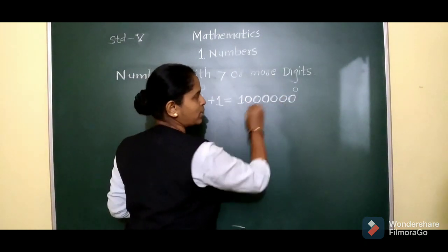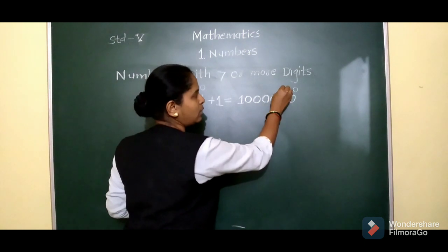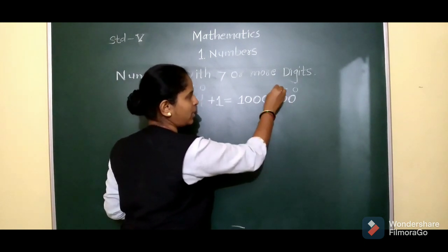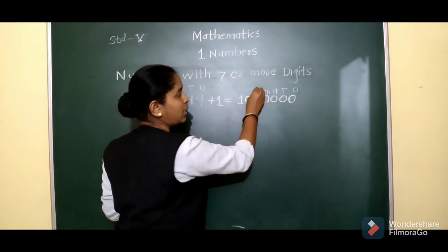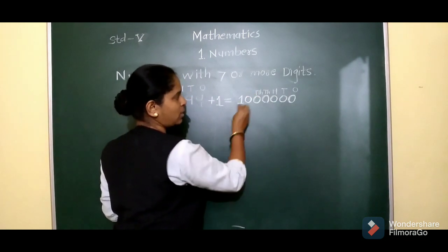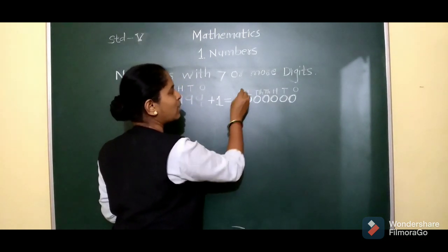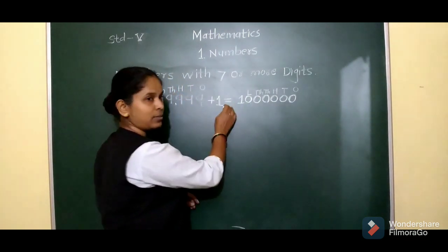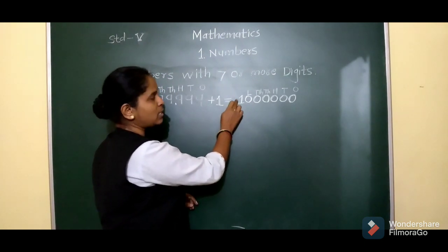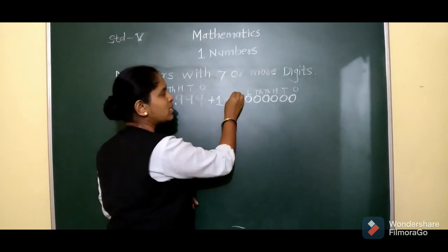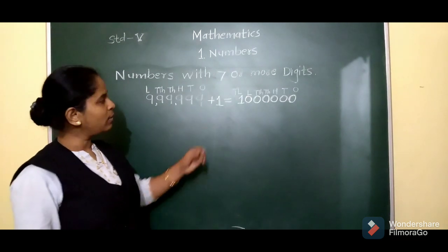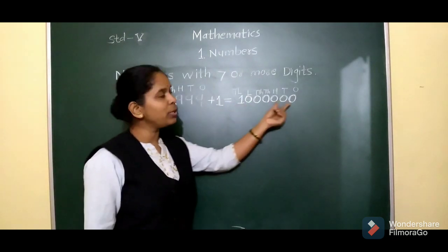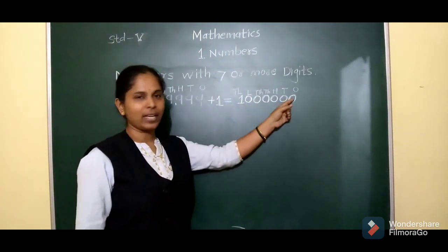The first place is 1's, then 10's, then 100, then 10,000, TTH means 10,000, then lakh, and this place is called 10,00,000. So how to read this number? 10,00,000.